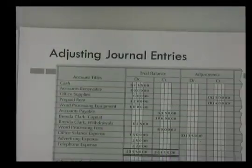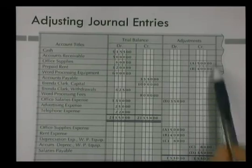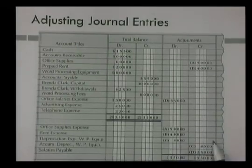We're going to go to the general journal and do our four journal entries for the adjustments. Let's look at a partial worksheet and look at the two adjustment columns. You will see this is a worksheet and in the adjustment columns we have four adjustments.